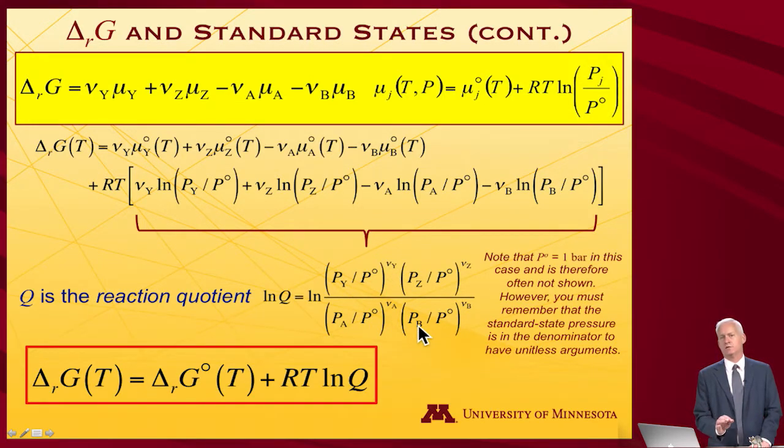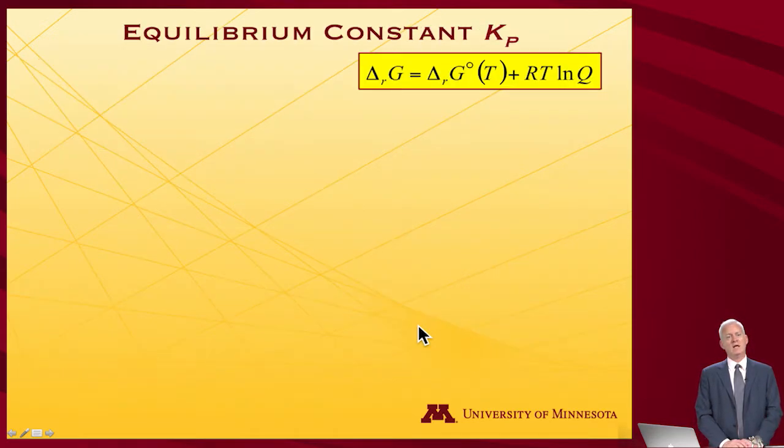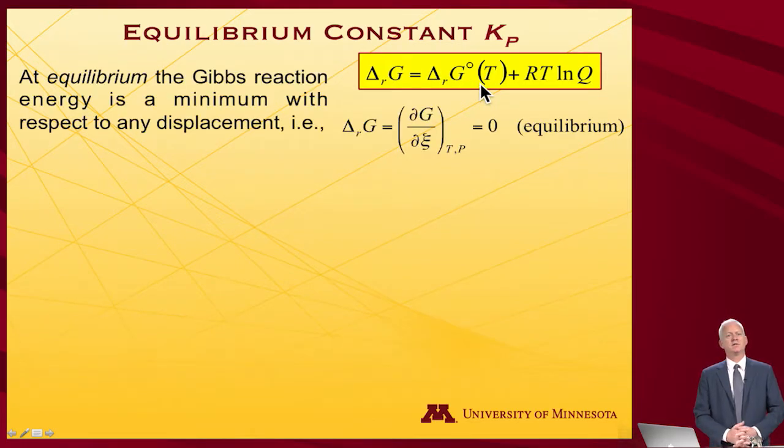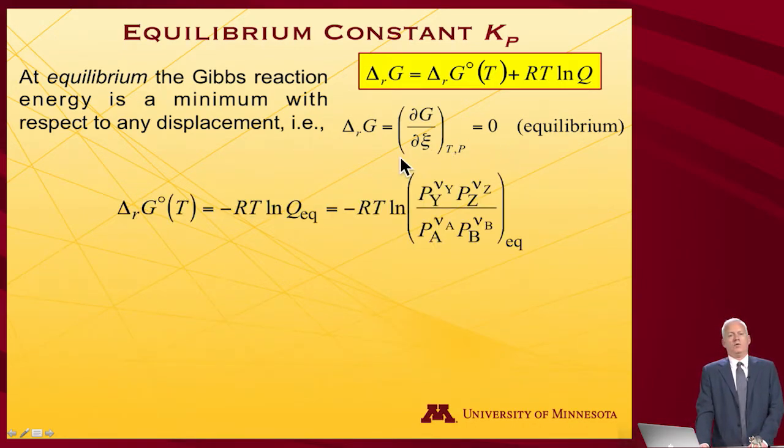For a given reaction not at standard state pressure of unmixed things, it's equal to something I presumably I've tabulated plus RT log Q, where now it's inside Q that all the details of actual pressures are to be found. Now let's talk about the equilibrium constant next.